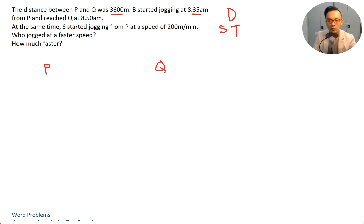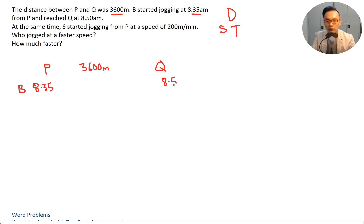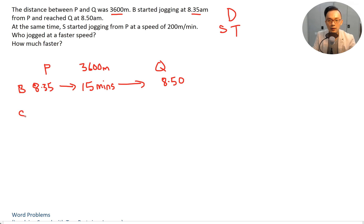Draw out P and draw out Q. The distance is 3600 meters. B started jogging at 8:35 AM and reached Q at 8:50, so he took 15 minutes to cover the distance from P to Q. S started jogging from P at a speed of 200 meters per minute. We need to find the speed of B.